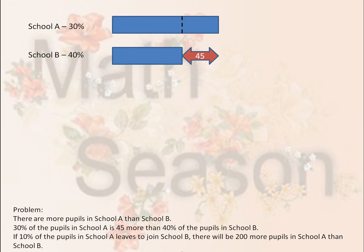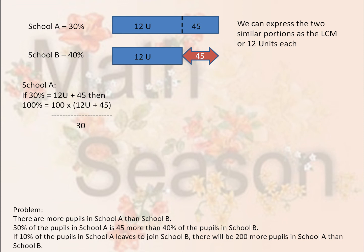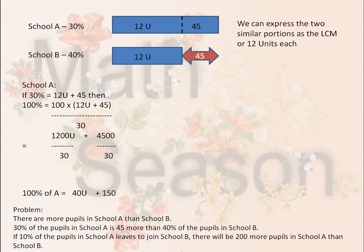Looking at the graph again, the difference between 30% of School A and 40% of School B is 45 pupils. We can express the two similar portions as the LCM, or 12 units each, with the difference of 45. So if 30% of School A equals 12U plus 45, then 100% of School A equals 100 times (12U + 45) divided by 30, which gives 40U plus 150. Therefore, 10% of A, which moves to School B, is 4U plus 15.